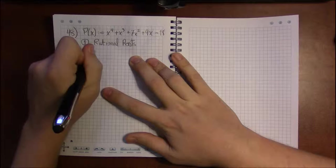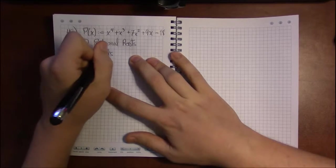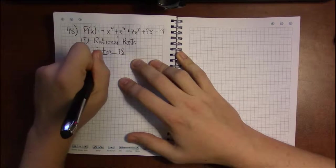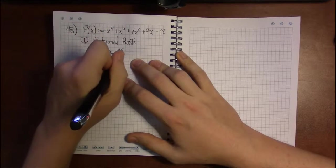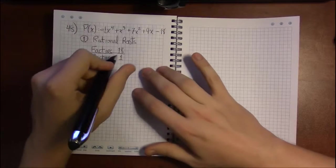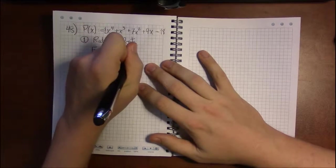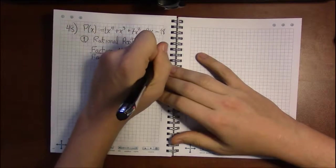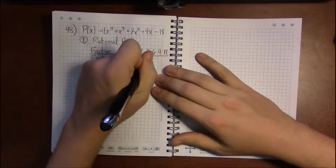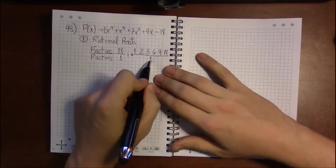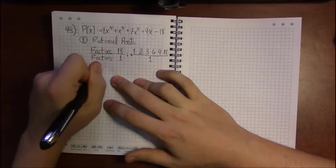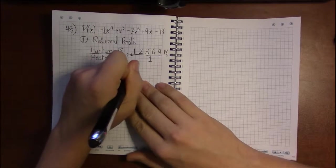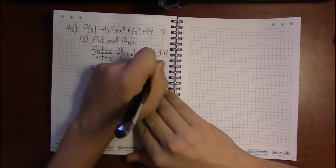We're looking at the rational roots. Unfortunately, we've got to look at the factors of the constant term, which is 18, over the factors of our leading coefficient, which is 1. Factors of 18 are 1, 2, 3, 6, 9, and 18. If I divide those by 1, I'm not going to change any of them. These are all the possible nice roots: plus or minus 1, 2, 3, 6, 9, and 18.